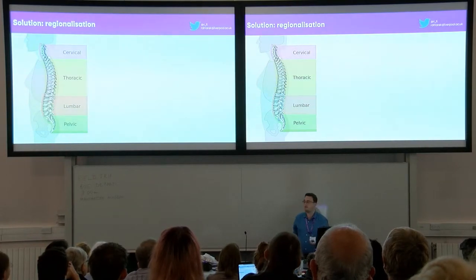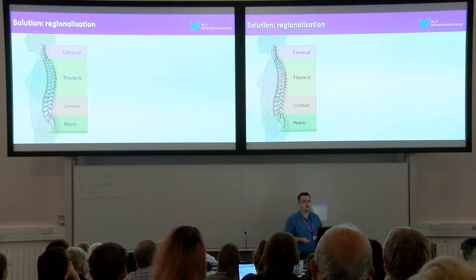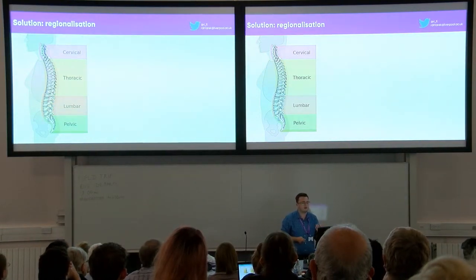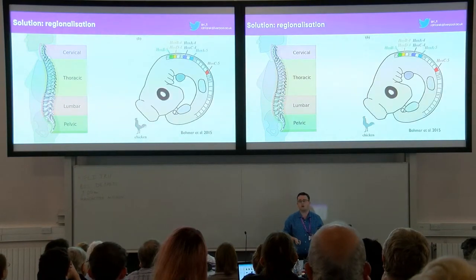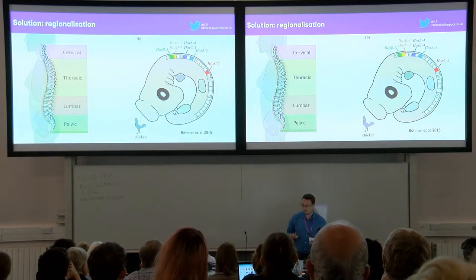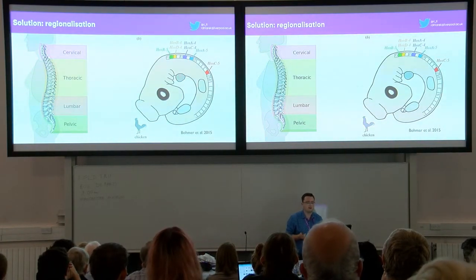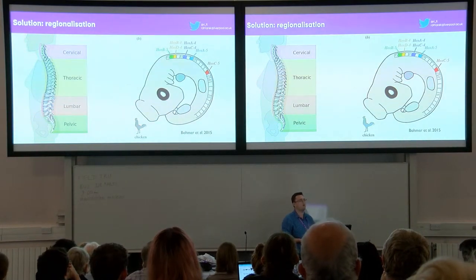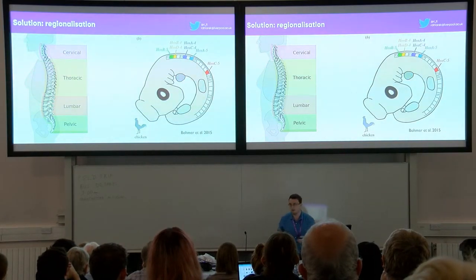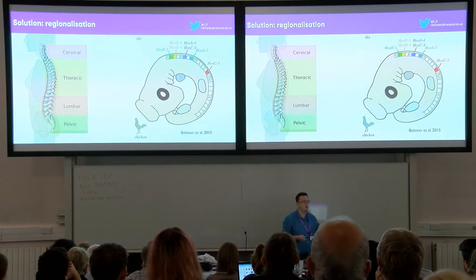I think the solution lies in regionalisation. Regionalisation is really the splitting up of the axial column into distinct units, where these distinct units have distinct flexion patterns, and the boundaries between these regions are controlled by Hox genes. Recently it's been found that in chickens there exist sub-regions - regions within regions - and in a chicken there are said to be five cervical sub-regions. So if that's the case for all birds and all birds have the same number of sub-regions, I think regionalisation is the homologous metric we should use when studying neck elongation.